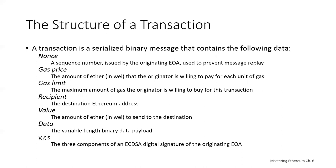Let's take a look at the basic structure of a transaction. These transactions are serialized and transmitted on the Ethereum network. A transaction is essentially a serialized binary message containing the following data: a nonce, a gas price, a gas limit, a recipient, a value, data, and digital signature components V, R, and S. The nonce is a sequence number issued by the originating externally owned account, used to prevent message replay attacks.